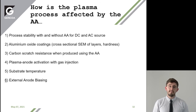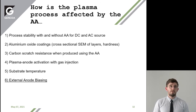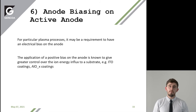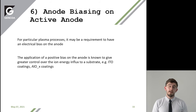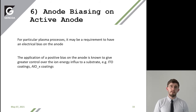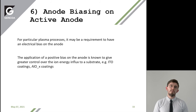Moving on to part six, the final part: external anode biasing. Using anode biasing in particular plasma processes may require an electrical bias on the anode. It's well known that the application of a positive bias on the anode gives great control over the ion energy influx to your substrate.